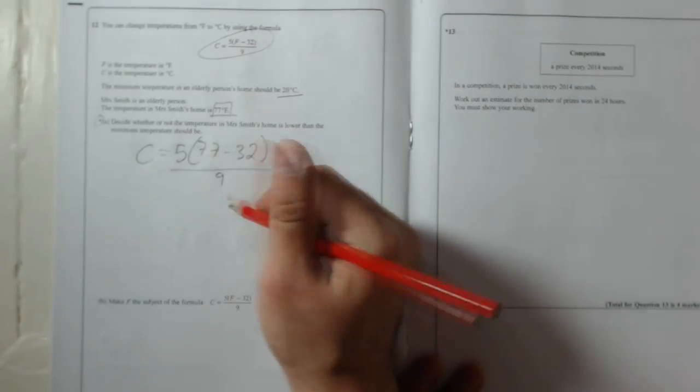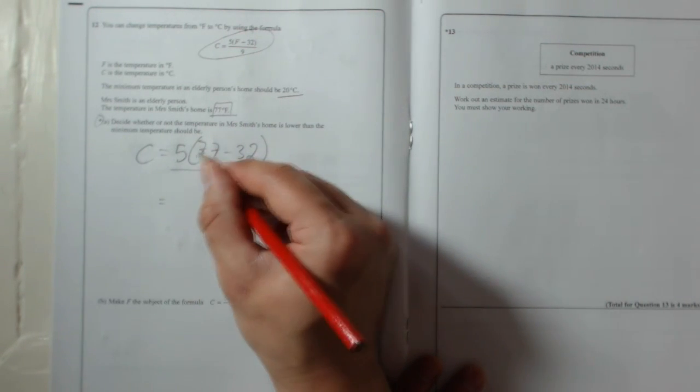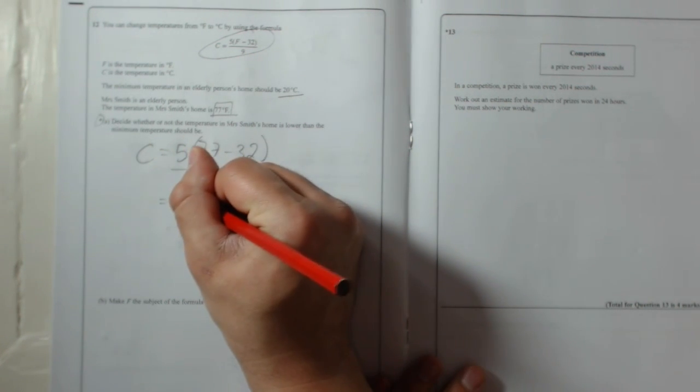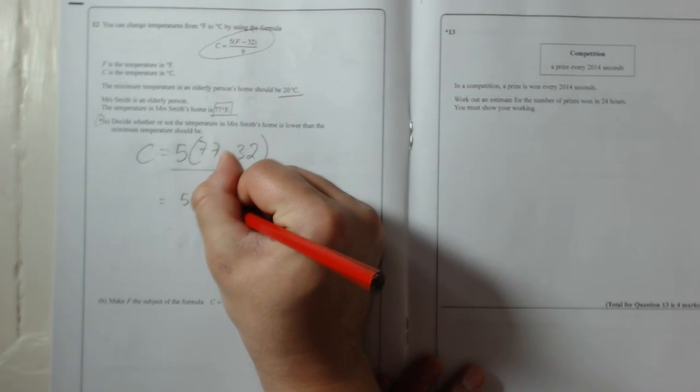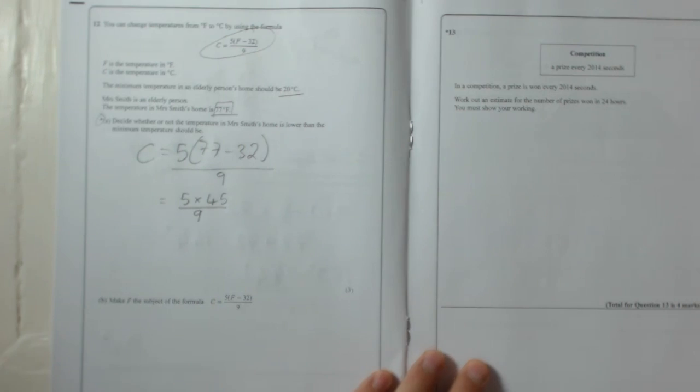So let's just gradually work this out. So 77 take away 32. 77 take away 2 is 75, take away 30 is 45. So it's 5 times 45, all divided by 9.